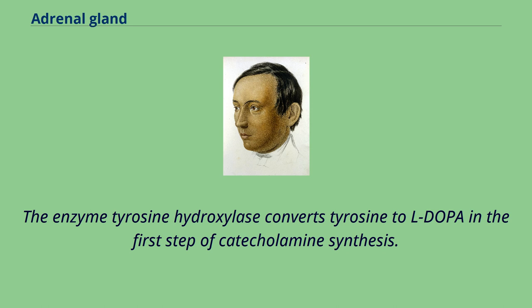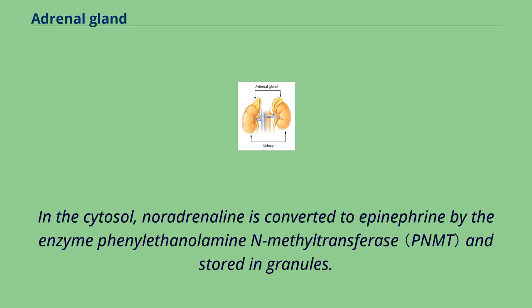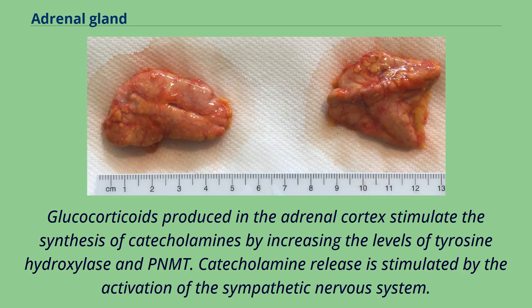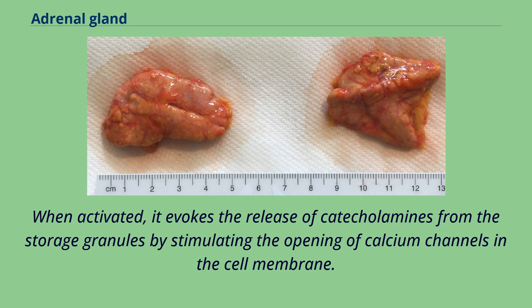The enzyme tyrosine hydroxylase converts tyrosine to L-DOPA in the first step of catecholamine synthesis. L-DOPA is then converted to dopamine before it can be turned into noradrenaline. In the cytosol, noradrenaline is converted to epinephrine by the enzyme phenylethanolamine N-methyltransferase (PNMT) and stored in granules. Glucocorticoids produced in the adrenal cortex stimulate the synthesis of catecholamins by increasing the levels of tyrosine hydroxylase and PNMT. Catecholamine release is stimulated by the activation of the sympathetic nervous system; splanchnic nerves innervate the medulla and evoke release of catecholamins from storage granules by stimulating the opening of calcium channels in the cell membrane.